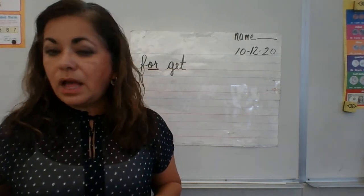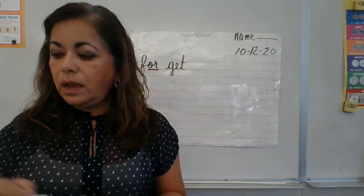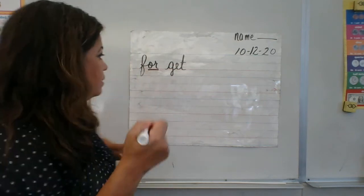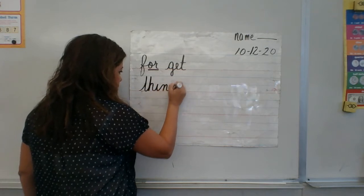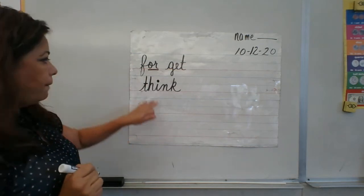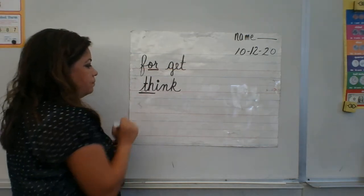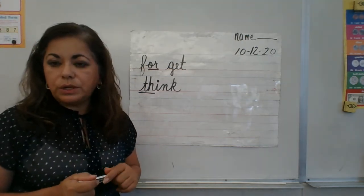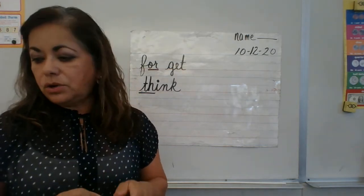Your next word is 'think.' Think — one syllable, and you have one phonogram in there. 'Th' is your multi-letter phonogram — I'm going to underline it. It has two sounds; which one are we sounding? Think — it's the first sound, so we don't need to put a one, just underline it.